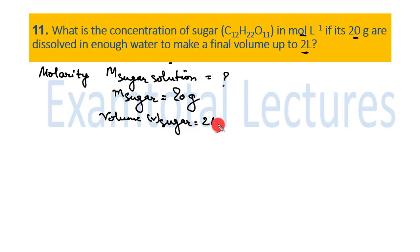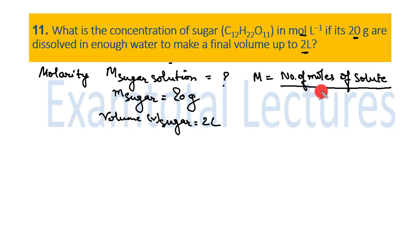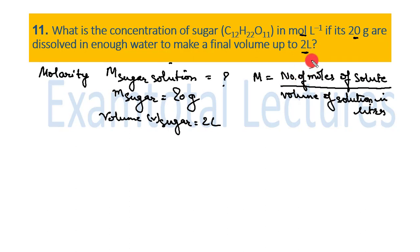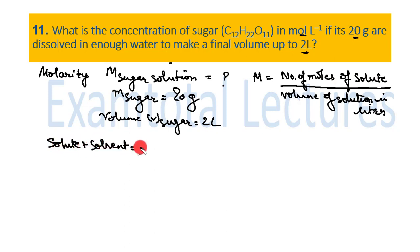The molarity formula is: M = number of moles of solute / volume of solution in liters. Volume is already given in liters — it is 2 liters. But we don't know the number of moles of solute yet. The solute here is sugar.